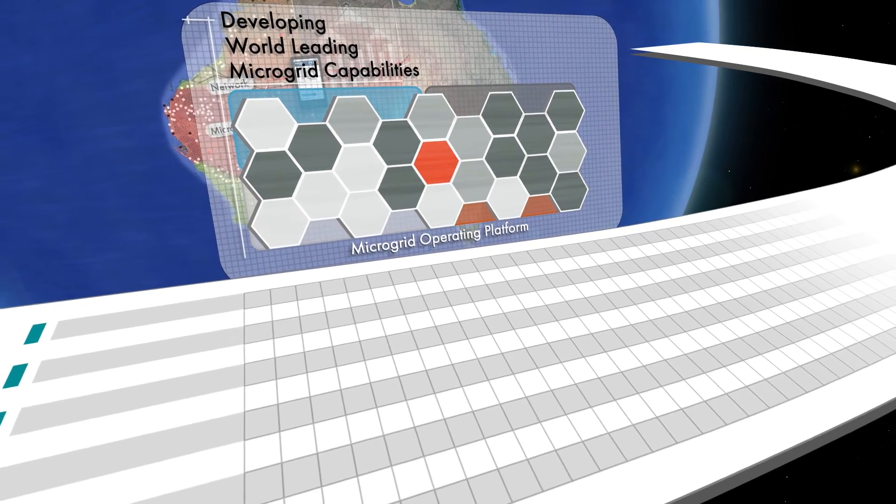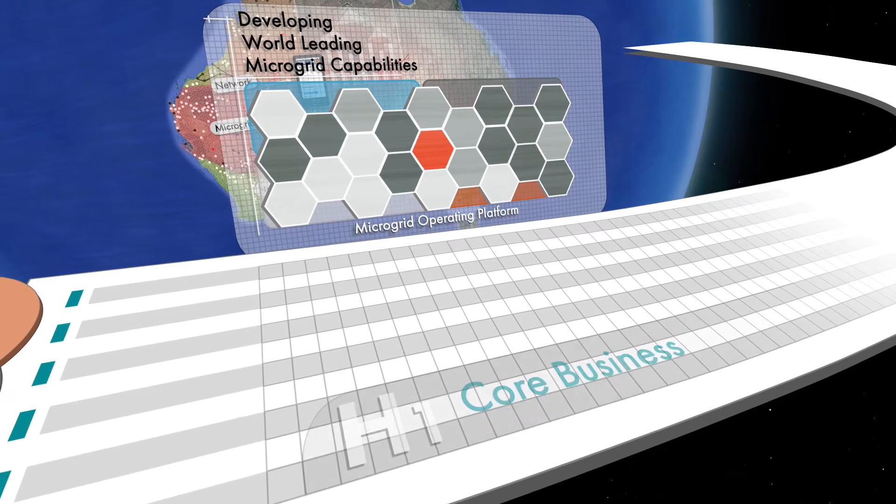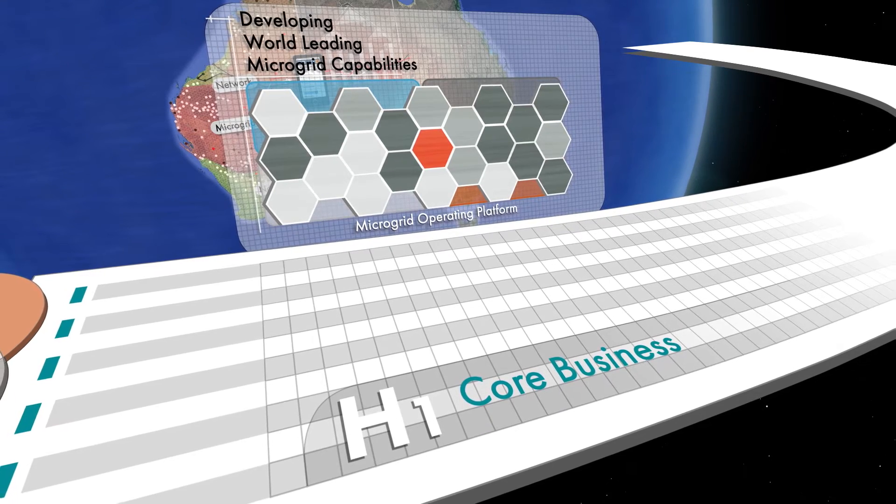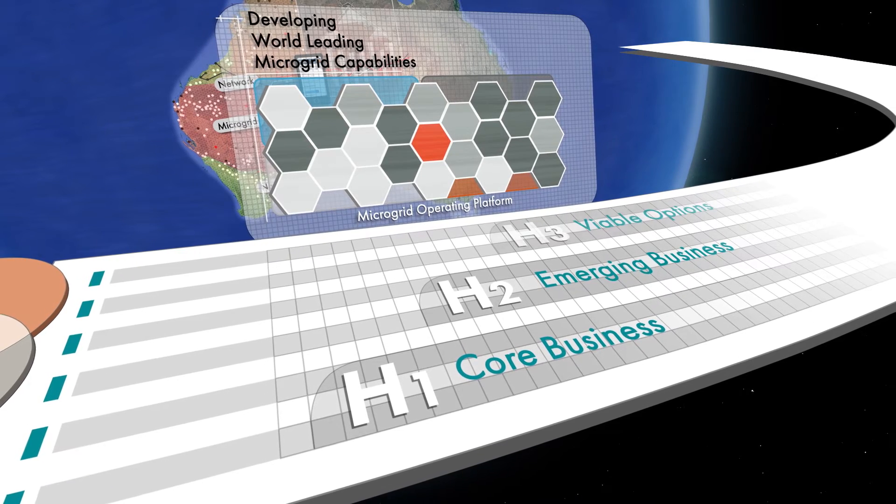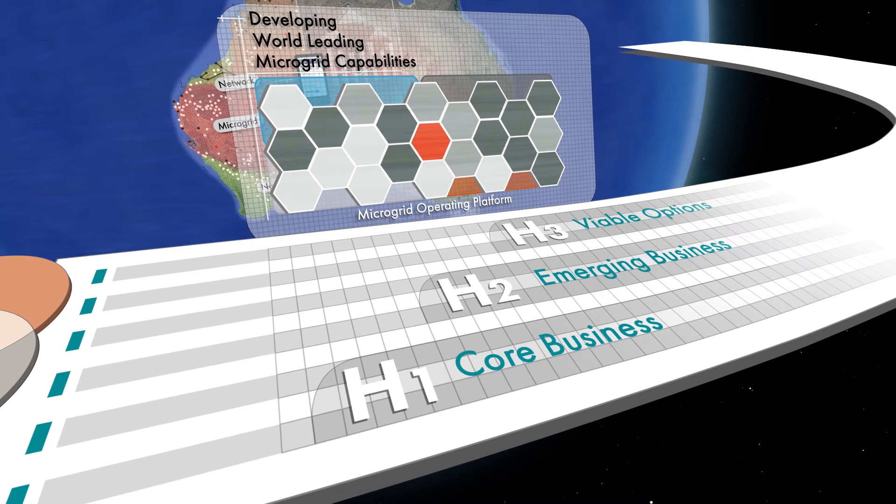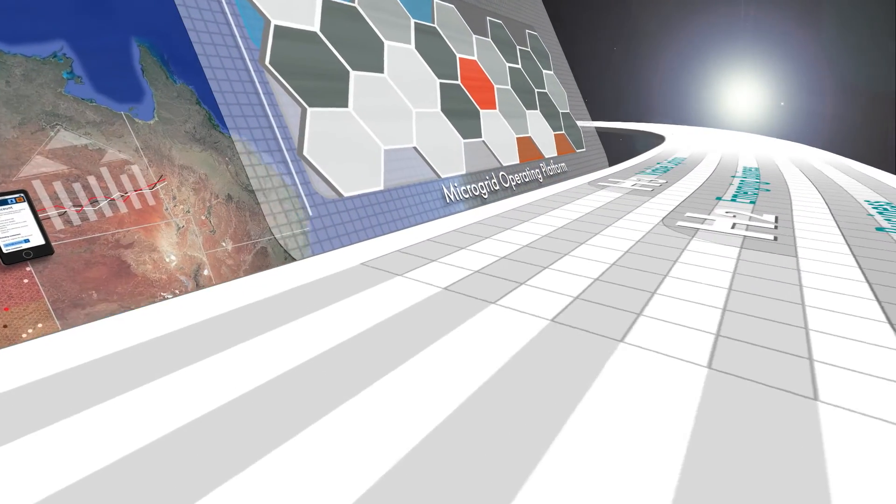Our three horizons framework ensures we maintain a focus on our core business, while facilitating the development of emerging business opportunities and exploring viable options to position Horizon Power for long-term sustainability in a rapidly changing environment.